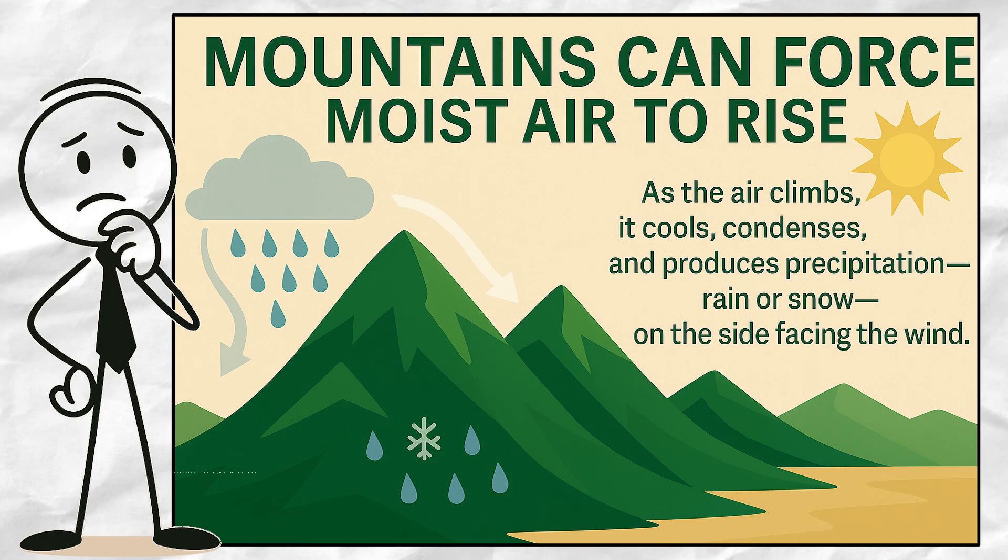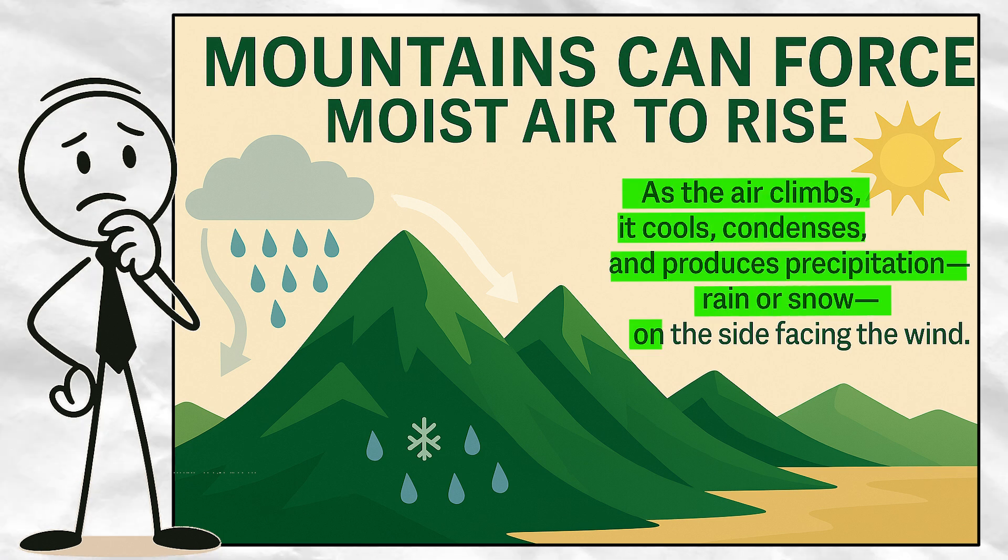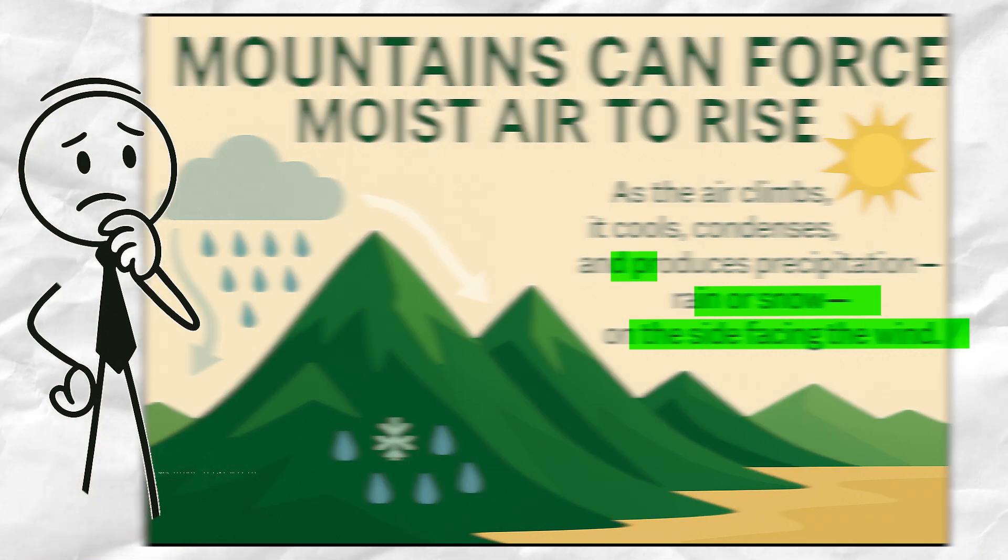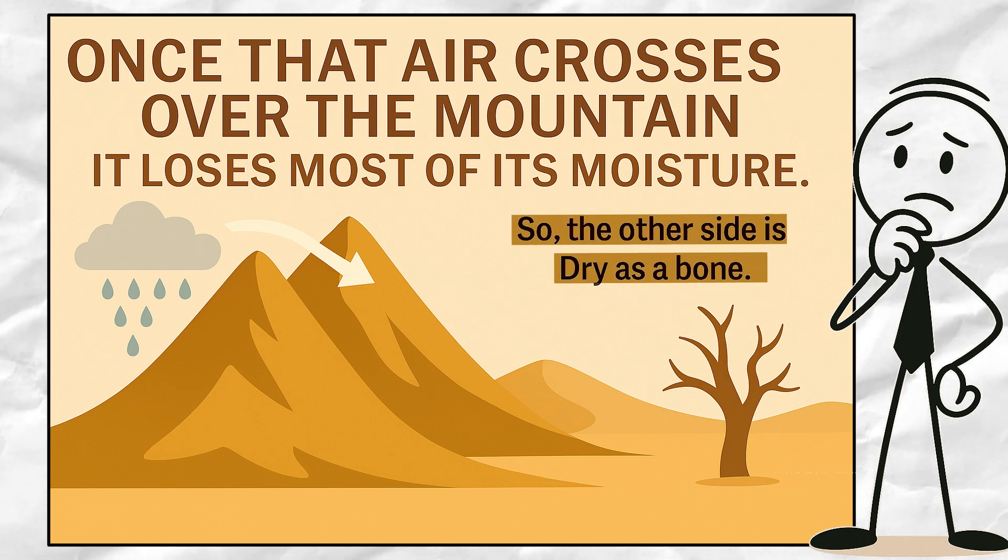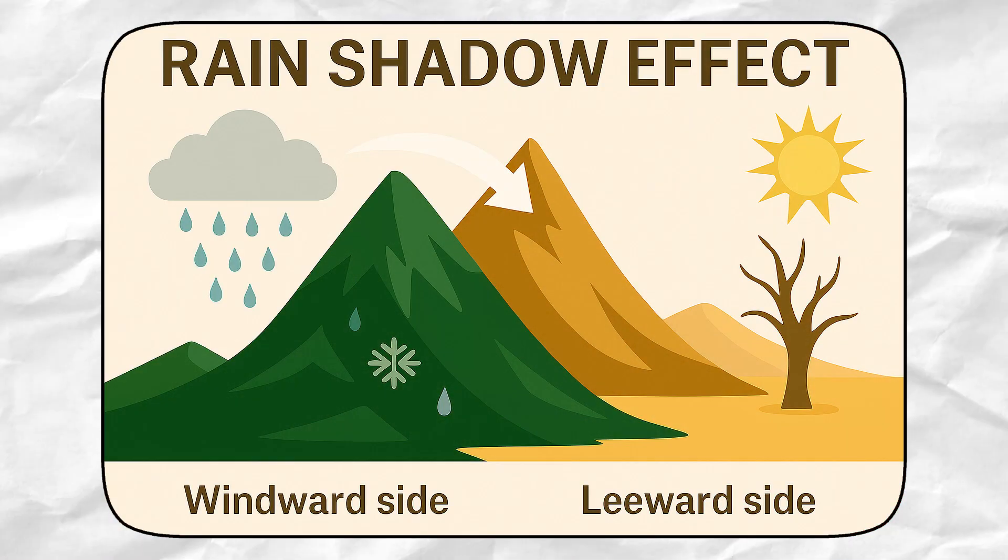Then we have mountains. They can force moist air to rise. As the air climbs, it cools, condenses, and produces precipitation, rain or snow on the side facing the wind. But once that air crosses over the mountain, it loses most of its moisture. So, the other side, dry as a bone. This is known as the rain shadow effect.